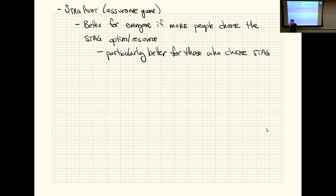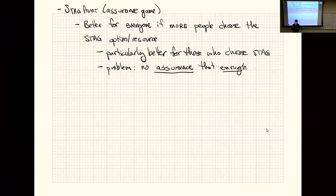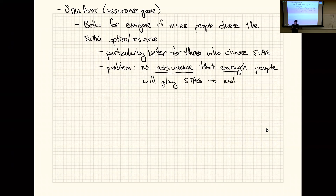The problem is that the reward depends on the number of people playing stag, so there's always a worry that too few people will play stag and you'll pay a cost for the stag option without much benefit. You could just take the hare option and be totally fine — possibly even slightly better off if others are playing stag. You have no assurance that enough people will play stag to make it worth it, so hare is the safer option.